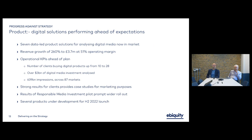Our digital product solutions are performing ahead of expectation. We brought to market seven data-led product solutions enabling us to analyse digital markets and help clients recognise where their spend is inefficient. Revenue growth from those solutions was 260% — albeit off a low base — delivering £3.7 million, a little over 5% of total revenues, at a very healthy margin of 51%. We see being able to maintain and stabilise that margin at around 55%.